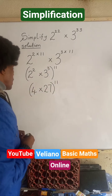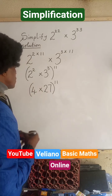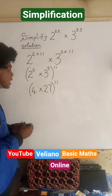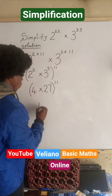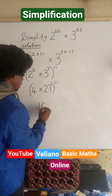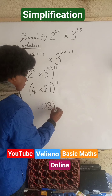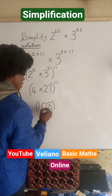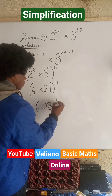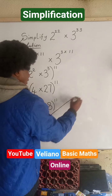The next thing I will do is 4 multiplied by 27, which gives us 108. This 108 power 11 will become the answer.